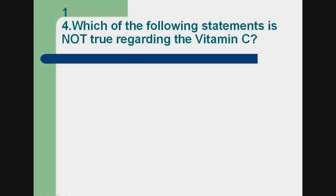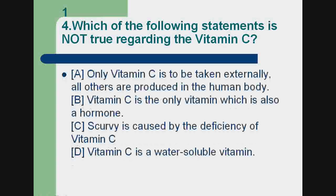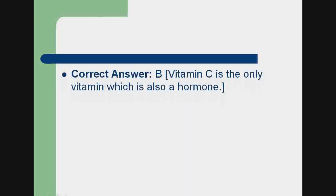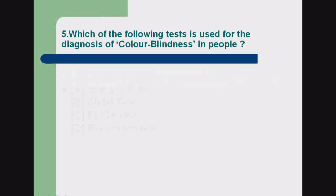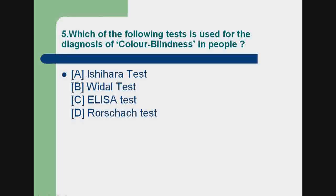Question 4: Which of the following statements is not true regarding Vitamin C? a) Only Vitamin C is to be taken externally; all others are produced in the human body. b) Vitamin C is the only vitamin which is also a hormone. c) Scurvy is caused by the deficiency of Vitamin C. d) Vitamin C is a water-soluble vitamin. Correct answer: b) Vitamin C is the only vitamin which is also a hormone.